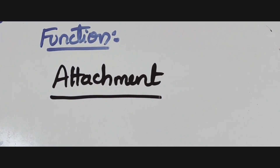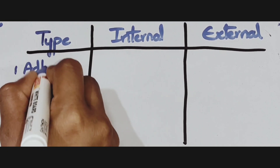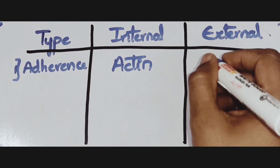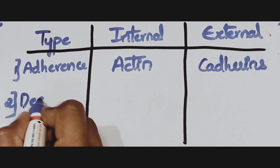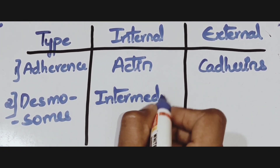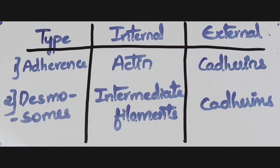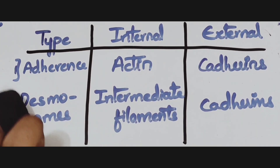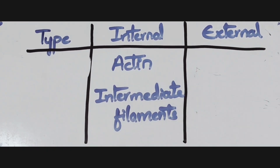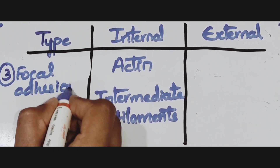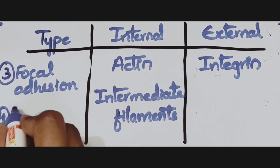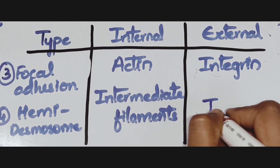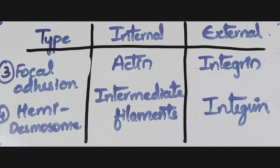The function of anchoring junctions is attachment. Looking at the summary table of internal and external proteins: for cell-cell junctions, both adherence junctions and desmosomes share the same external protein — cadherin — but internally one connects to actin and the other to intermediate filaments. For cell-matrix junctions, both focal adhesion and hemidesmosomes share the same external protein — integrin — but internally they connect to actin and intermediate filaments respectively.